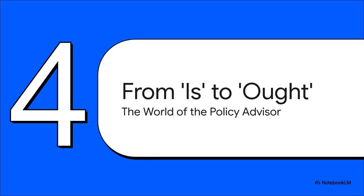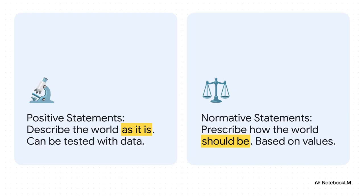So that's the economist wearing the scientist hat, using these models to describe what is possible. But that scientific understanding is usually just the beginning. Now let's see how that informs their other role — the policy advisor, the one who talks about what an economy ought to do. This brings us to a really critical distinction: positive versus normative statements.